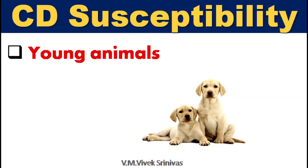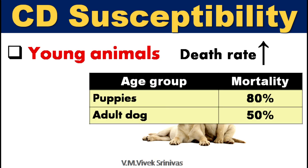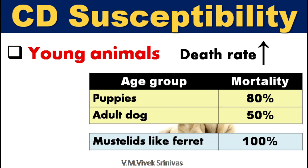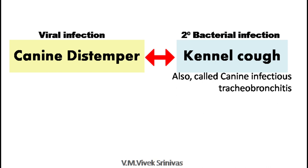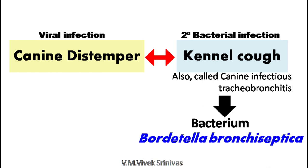Young animals are highly susceptible for this infection with very high mortality rate. Up to 100% mortality rate is seen in wildlife like mustelids. This viral infection is generally associated with secondary bacterial infection leading to kennel cough, caused by the bacterium Bordetella bronchiseptica.